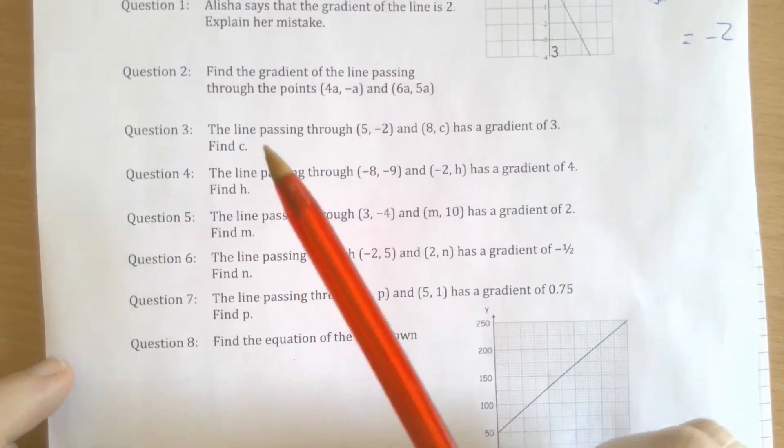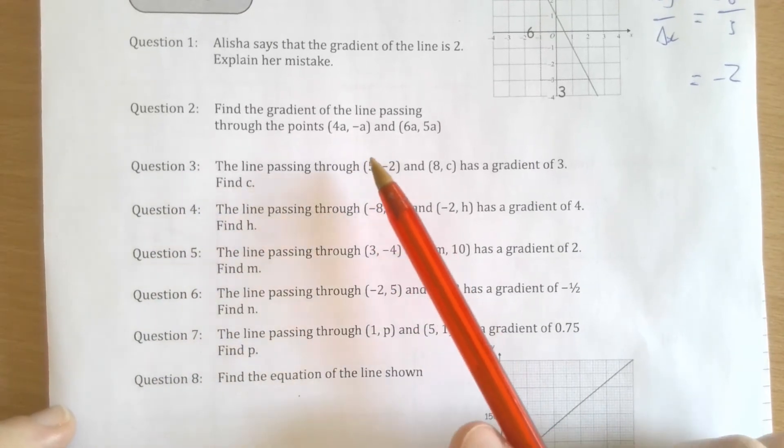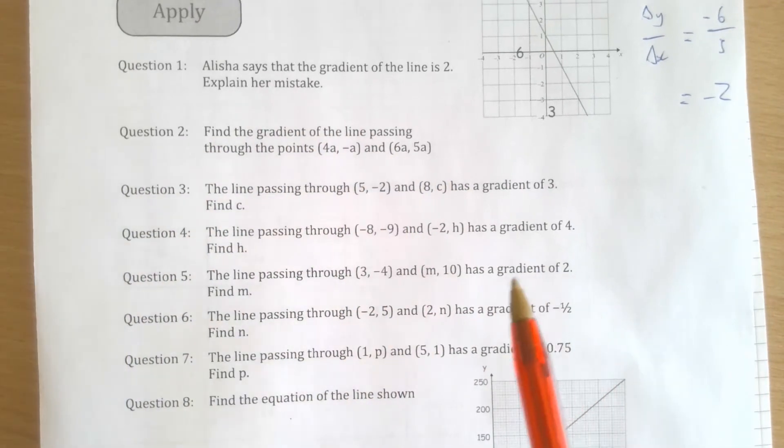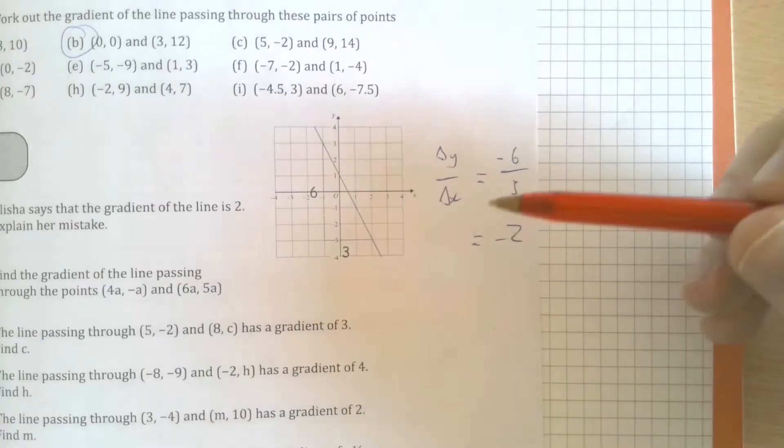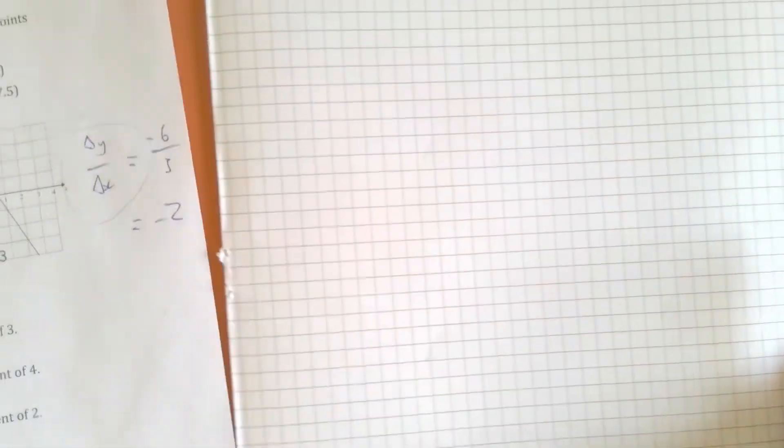Question two: find the gradient of the line passing through the points (4a, -a) and (6a, 5a). It's complicated because these are algebraic terms, but it's the same idea. It is always coming back to this: change in y over change in x. Let's give this a go.